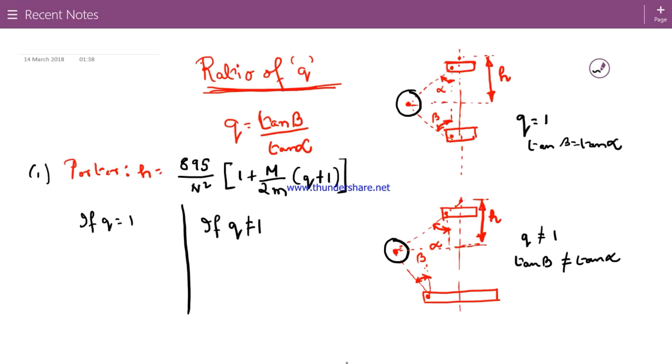Hello guys, we are back with the promised video on the ratio of Q, the ratio Q that represents Q is equal to tan beta by tan alpha.